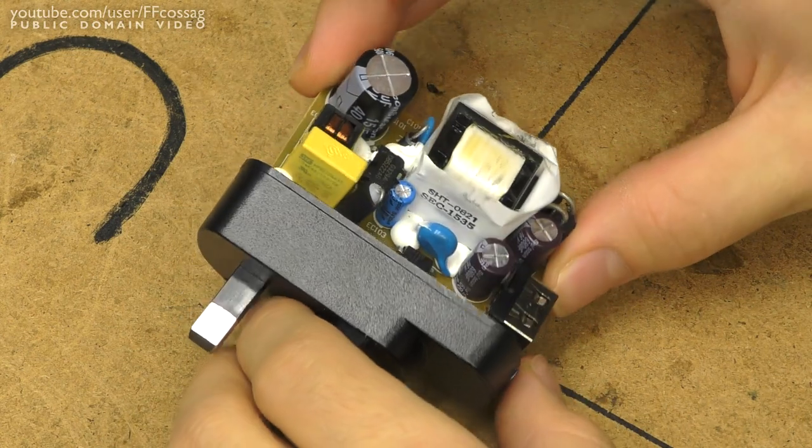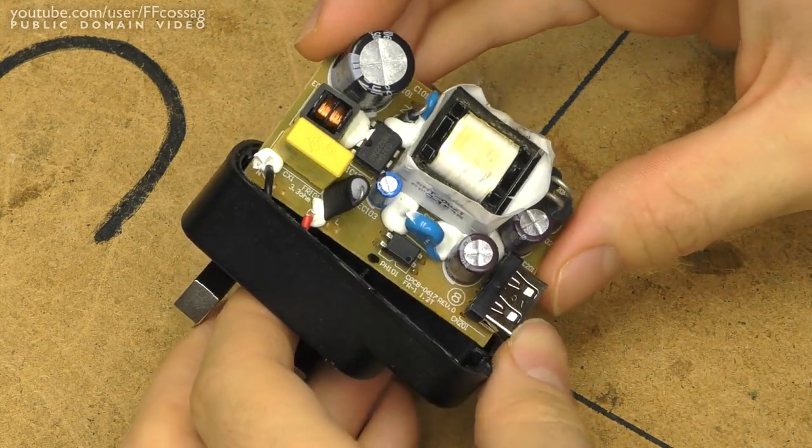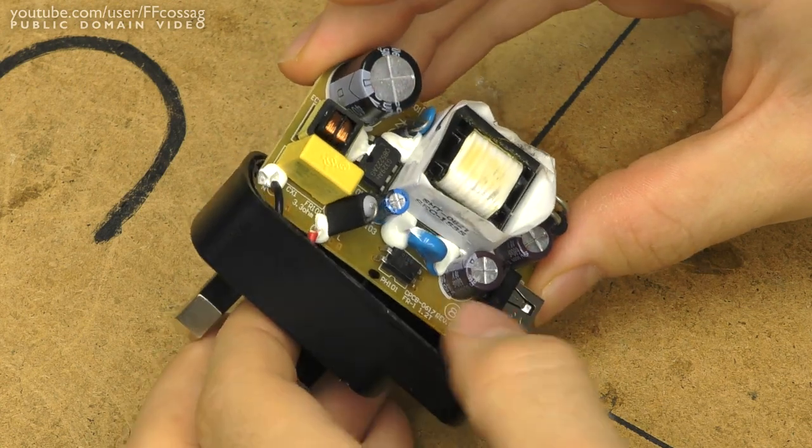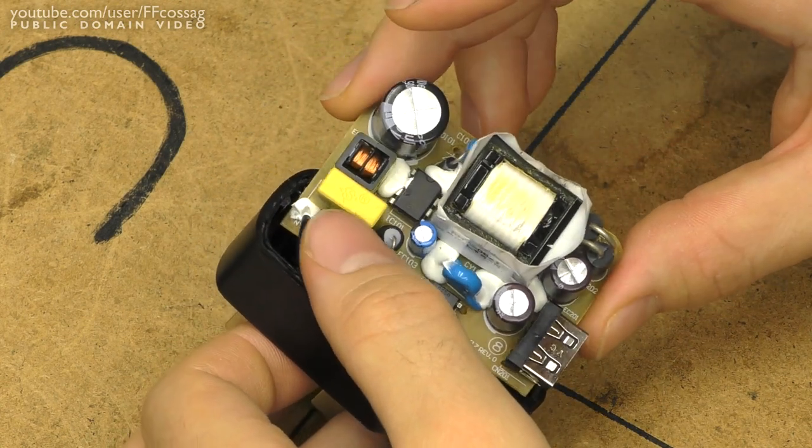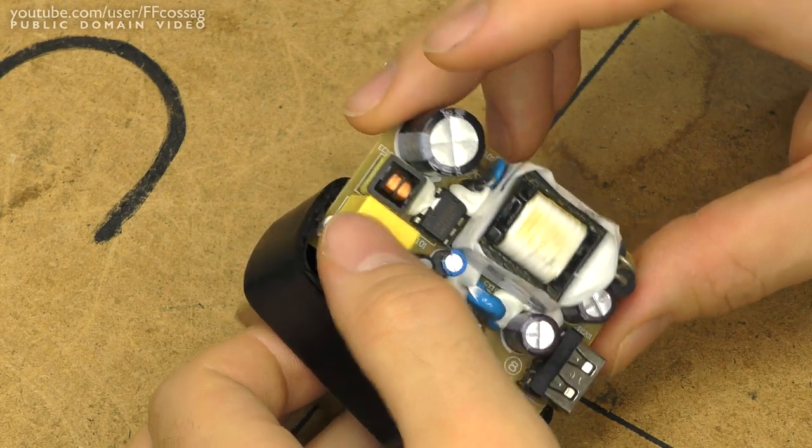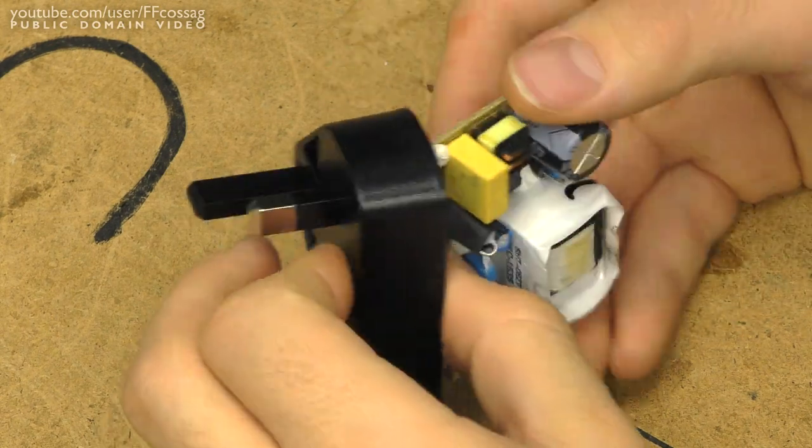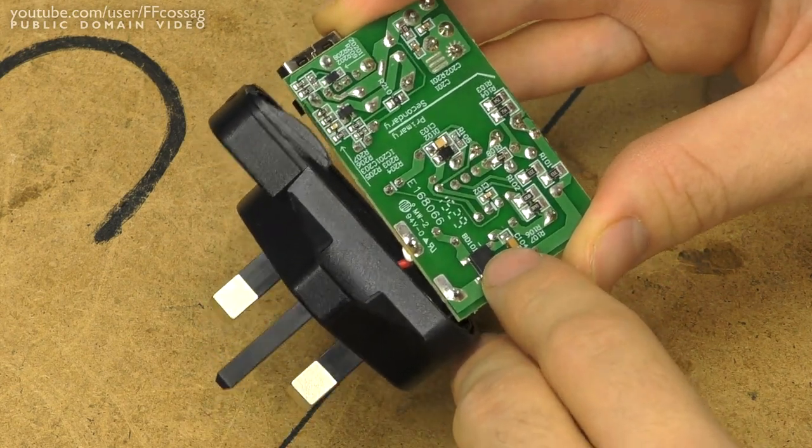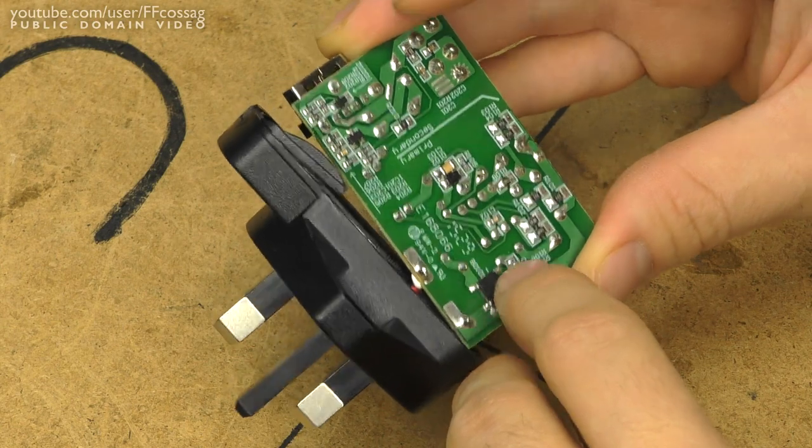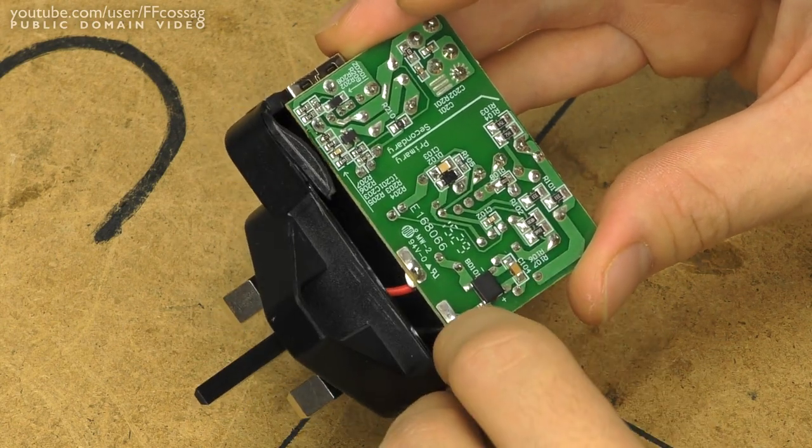And inside it does look like a reasonable quality little switch mode power supply. At first hand to quality we have a proper looking mains filter there with a big film cap, common mode rejection choke. On the other side of the board we actually have a real bridge rectifier, as opposed to just four 4007 diodes. A bit of extra filtering going on there too.